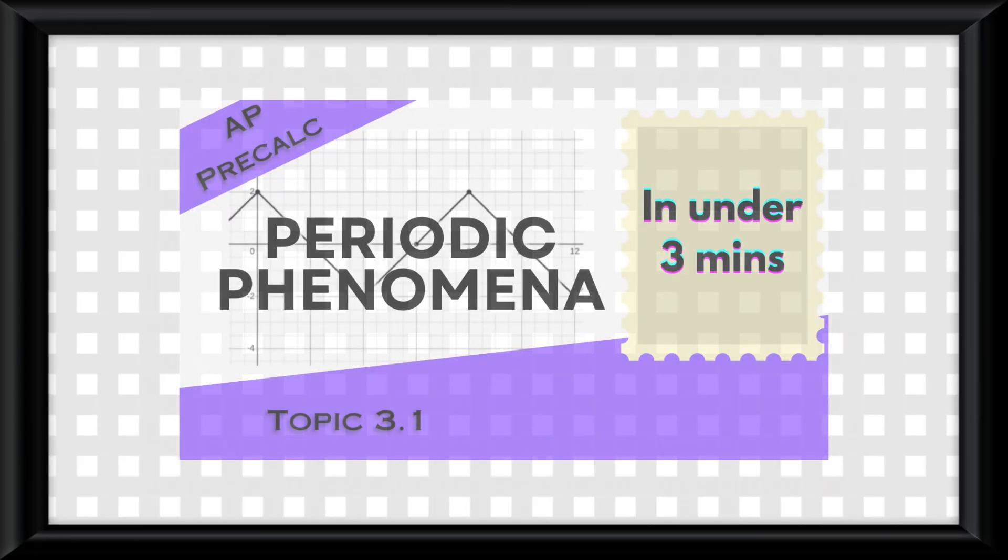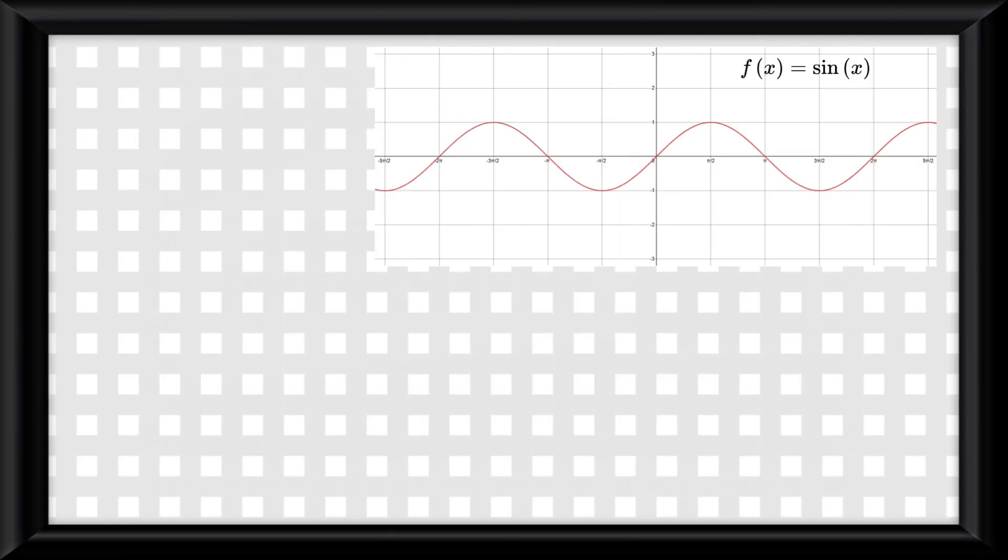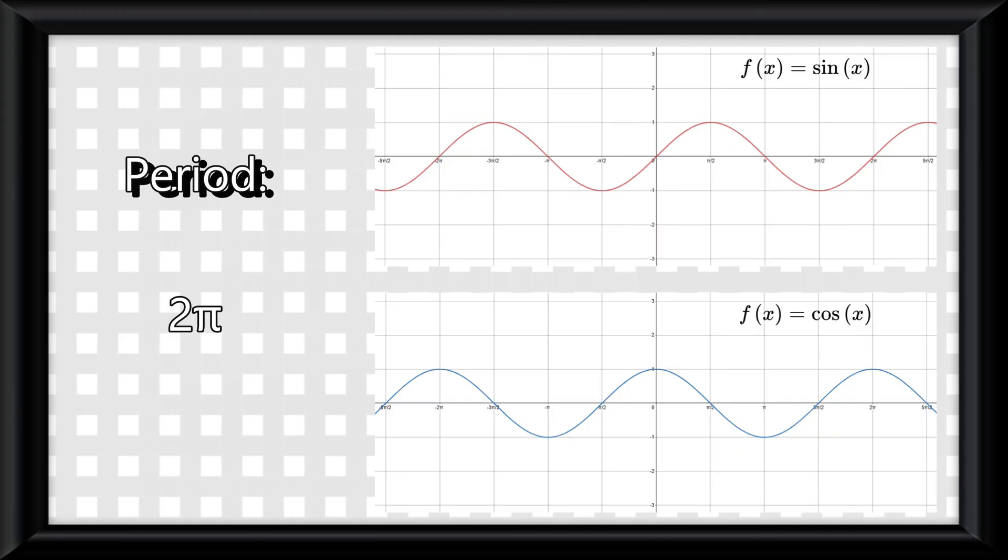Of course you know how to calculate periods from the 3.1 video, and in the parent sine and cosine functions it is 2 pi. The frequency is simply whatever the period is with a 1 on top of it.